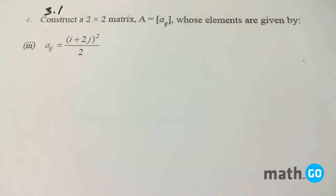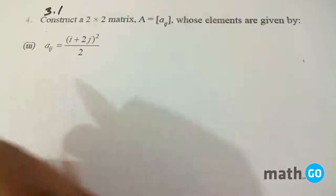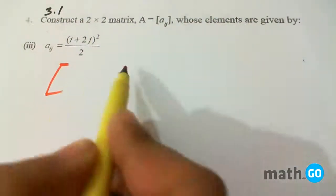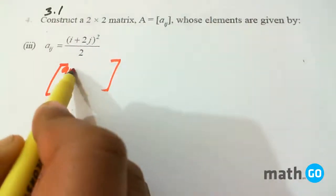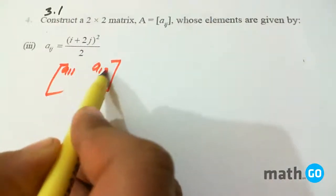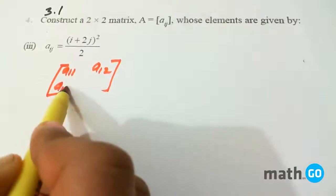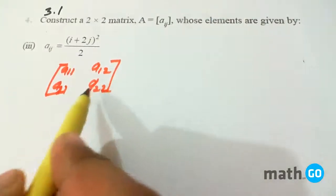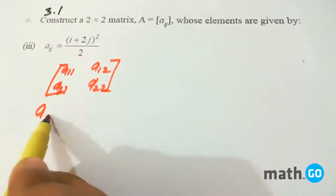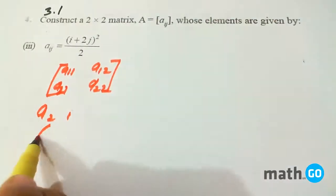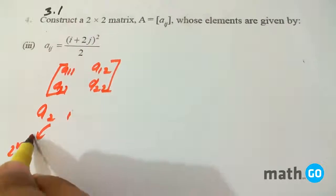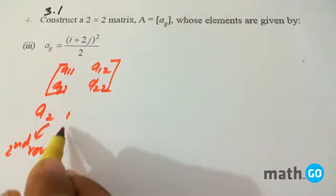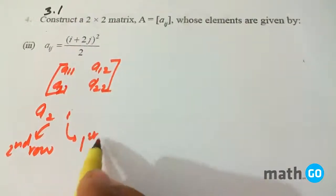Now generally if we look at it, suppose it is a 2 by 2 matrix, then this is A11, A12, A21, and A22. It means if A21 is written, this will represent second row and first column.